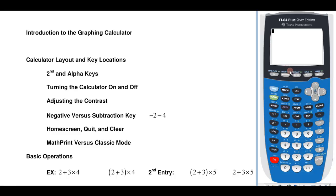If I want to adjust the contrast, if you have a calculator that's running on batteries, you would hit the second button and then the little up arrow. You'll notice a little number appears right there, and as that gets higher that will adjust the contrast darker. And the higher that number is, if your keys are real light, that tells you that your battery is getting low.